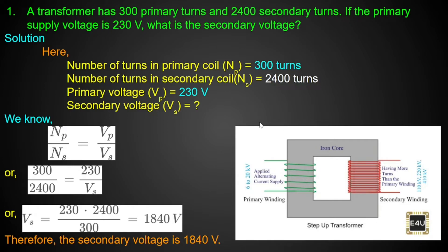Now we check: is this transformer step-up or step-down? The primary turns are 300 and secondary turns are 2400, so secondary is greater. This means it is a step-up transformer. In a step-up transformer, Vs is greater than Vp, which matches our result.